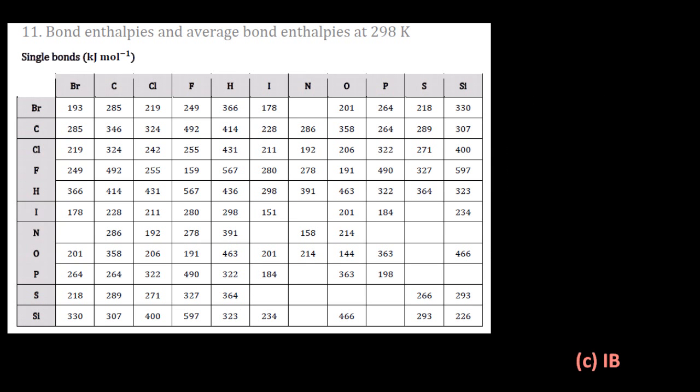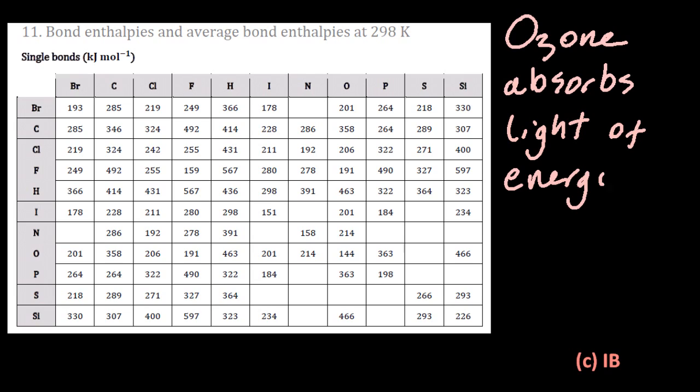Here is table 11 from the IB data booklet, copyright IB, and here's a fun fact about ozone. Ozone absorbs light of energy 363 kilojoules per mole.